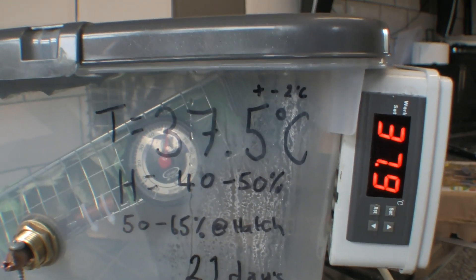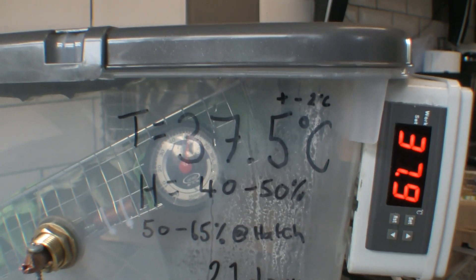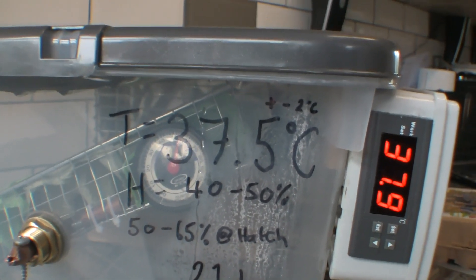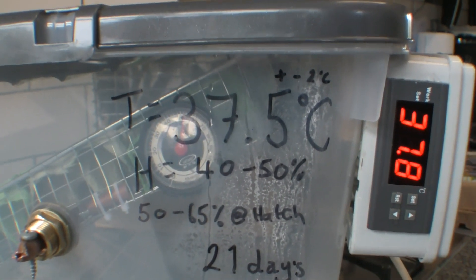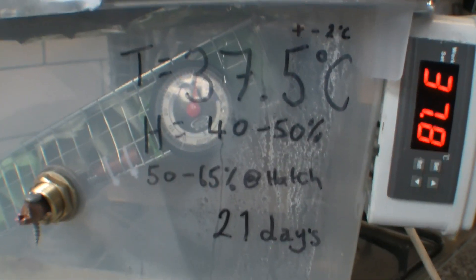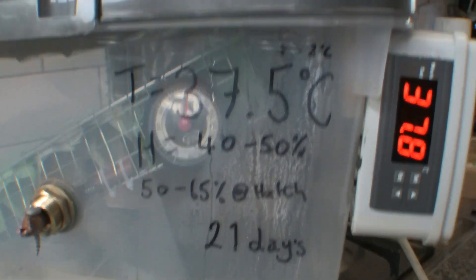The humidity wants to be between 40 and 50 percent during incubation, rising to 50 to 65 percent during hatching. And the eggs should hatch after 21 days of incubation.